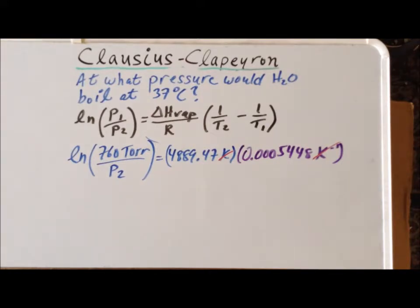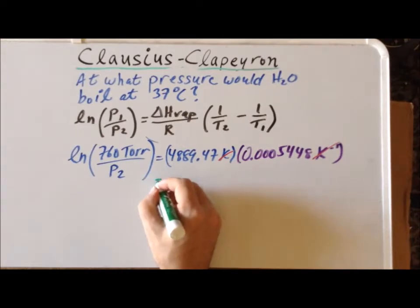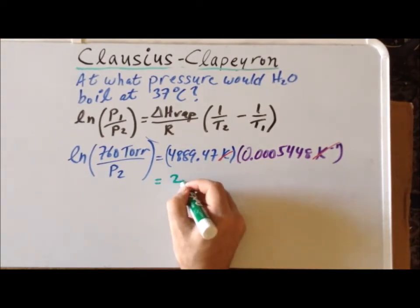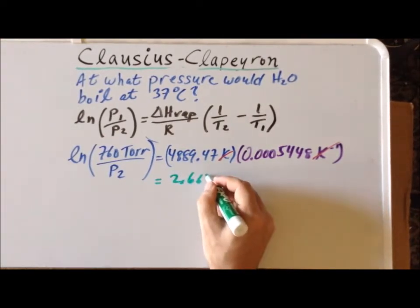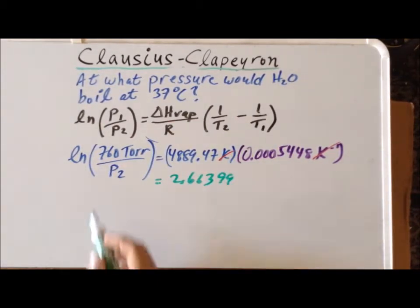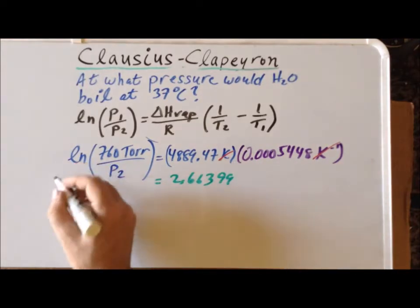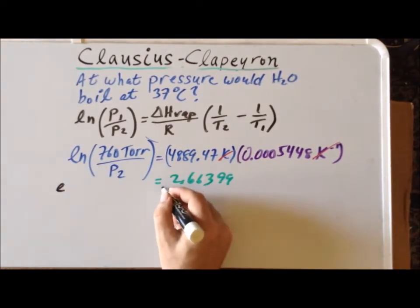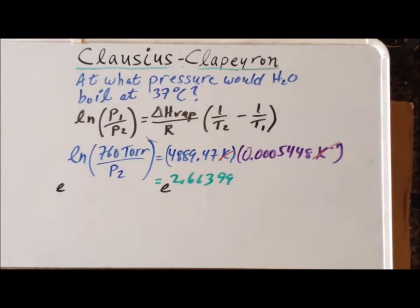So the right hand side becomes 2.66399. And what we can do is to eliminate the natural log on the left hand side, we raise the left hand side and the right hand side as powers of E.